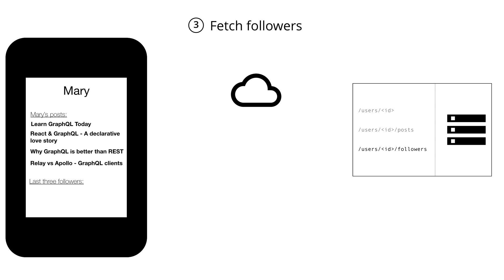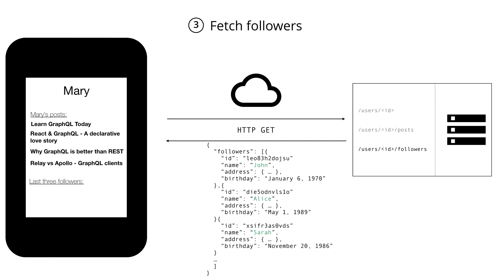Finally, to implement the last requirement of our profile screen, we have to hit the /users/ID/followers endpoint to fetch the followers for the user whose profile screen we're showing. We send a GET request to the API and the server responds with the followers' information. Notice again we're downloading a lot of additional data we don't actually want to display, and we only want the names of the last three followers — but there might be hundreds or even thousands of followers being downloaded. But again, we can at least render the information inside our app.